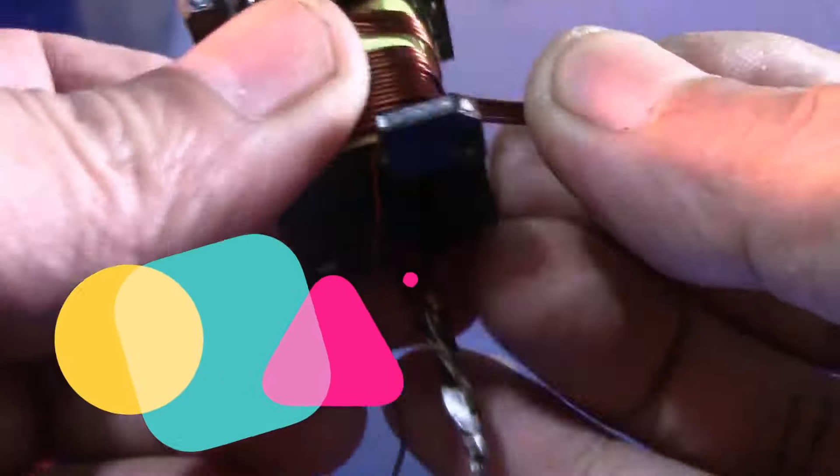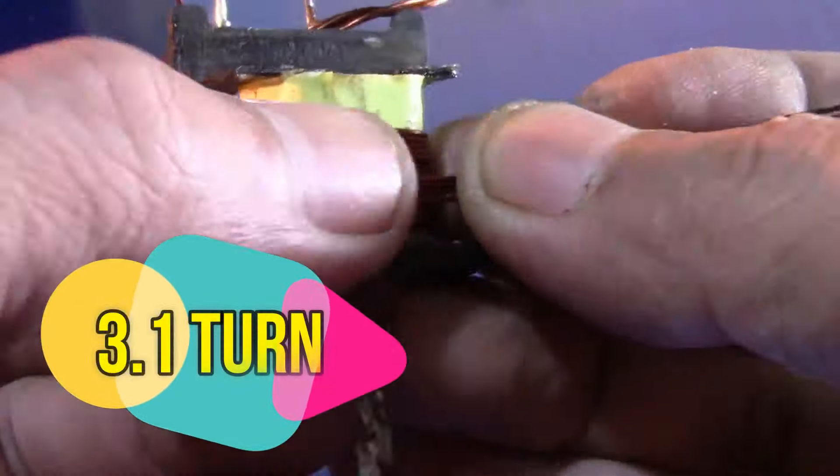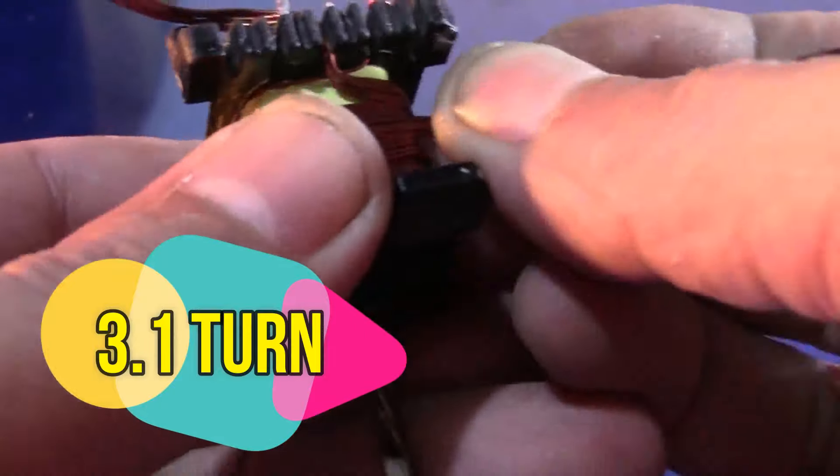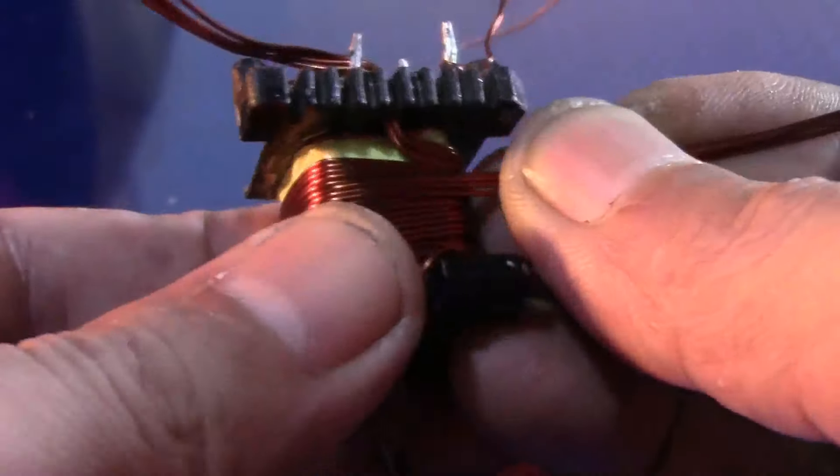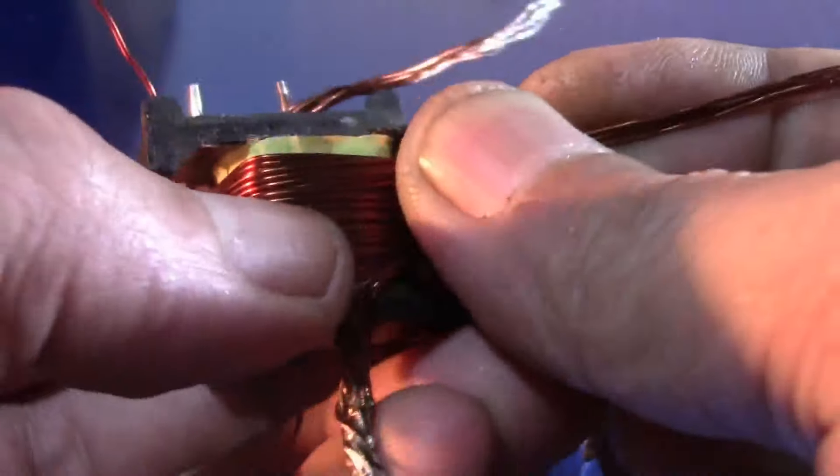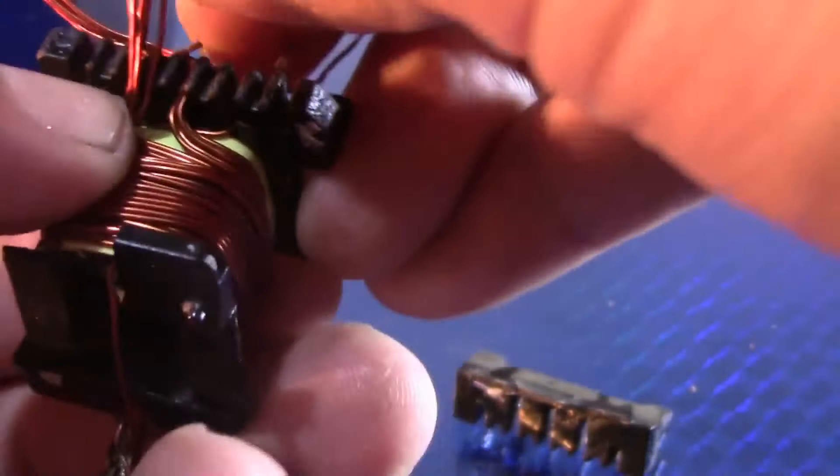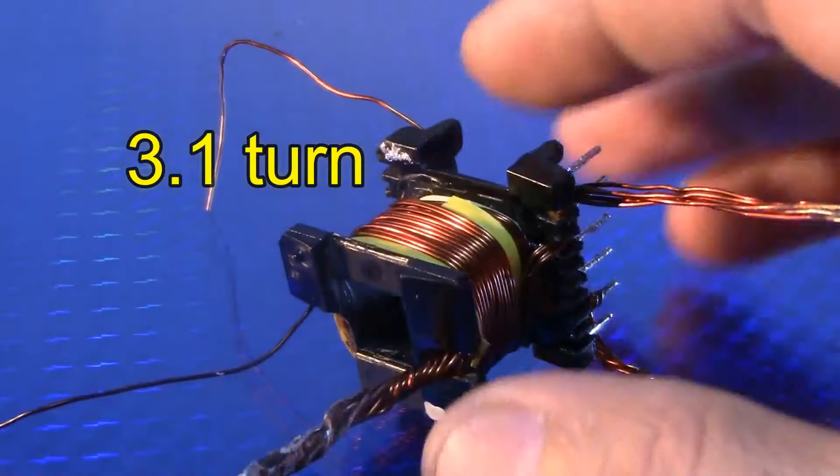I will wind the second turn overlapping the first turn because there is no more space. When overlapping, I will press it down tightly and make sure the ends are neat and tidy.